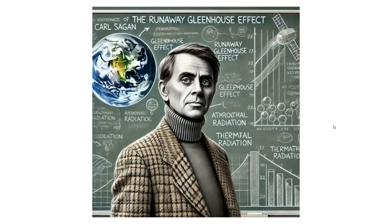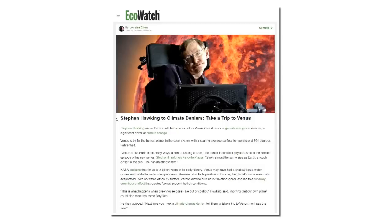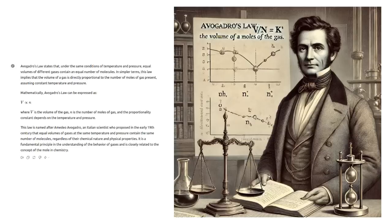Carl Sagan had no clue what he was talking about. Venus is not hot because of a runaway greenhouse effect — Venus is hot because it has a very thick troposphere. He should have stuck to basic principles. And even more so for Stephen Hawking, who took the runaway greenhouse idea to even more ridiculous levels. We need real scientists once again who understand that whatever their theory is, it has to abide by basic principles.